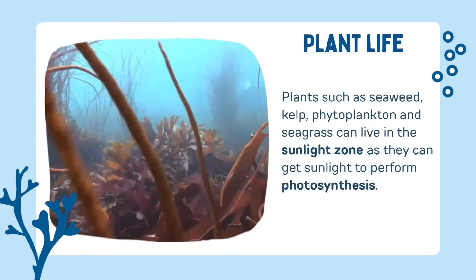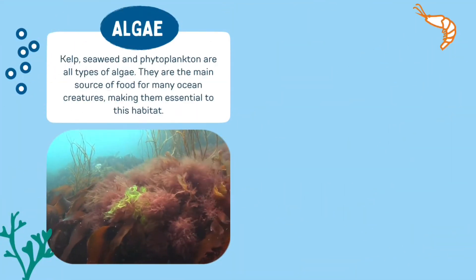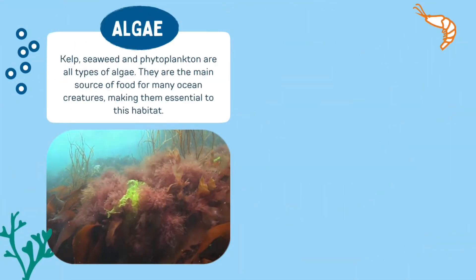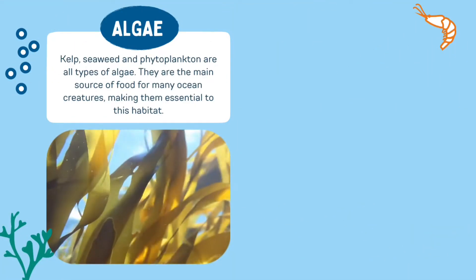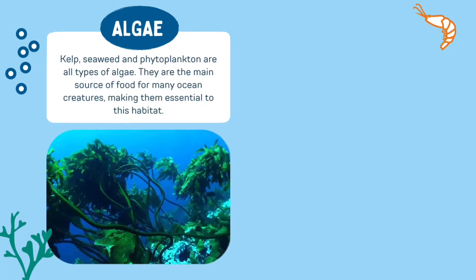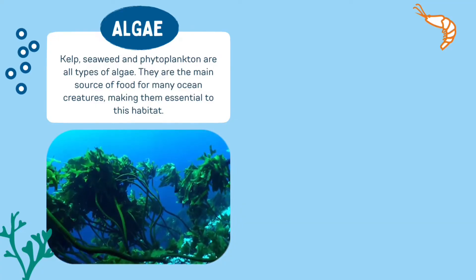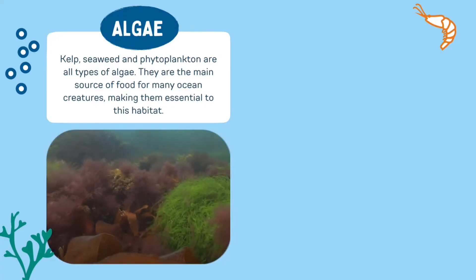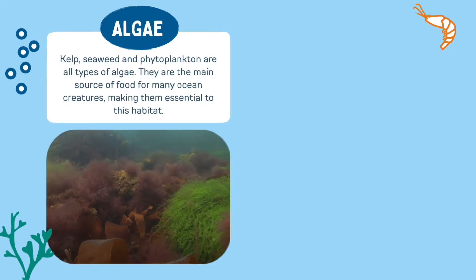There are two main types of plant in the ocean. Let's start with algae. Kelp, seaweed and phytoplankton are all types of algae. They are the main source of food for many ocean creatures, making them essential to this habitat.